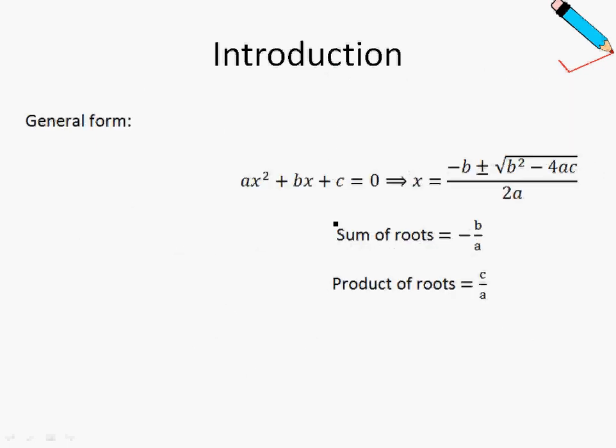So in summary, the general form of a quadratic equation can be written in this form. And this is the sum of roots, which is what we discussed just now, which is alpha plus beta. And the product of roots is just alpha beta. So we'll be using these formulas in the next few examples.